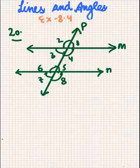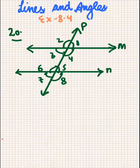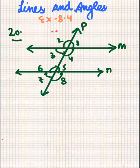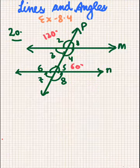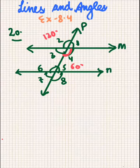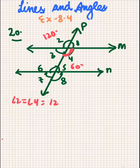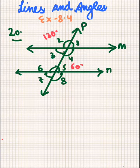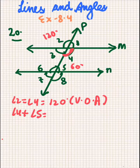Question 20 says that P is a transversal to lines M and N. Angle 2 is 120 degrees and angle 5 is 60 degrees. We have to prove that M is parallel to N. First, angle 2 will be equal to angle 4, which is 120 degrees, because these are vertically opposite angles. So angle 4 plus angle 5 equals 120 plus 60, which is 180 degrees.